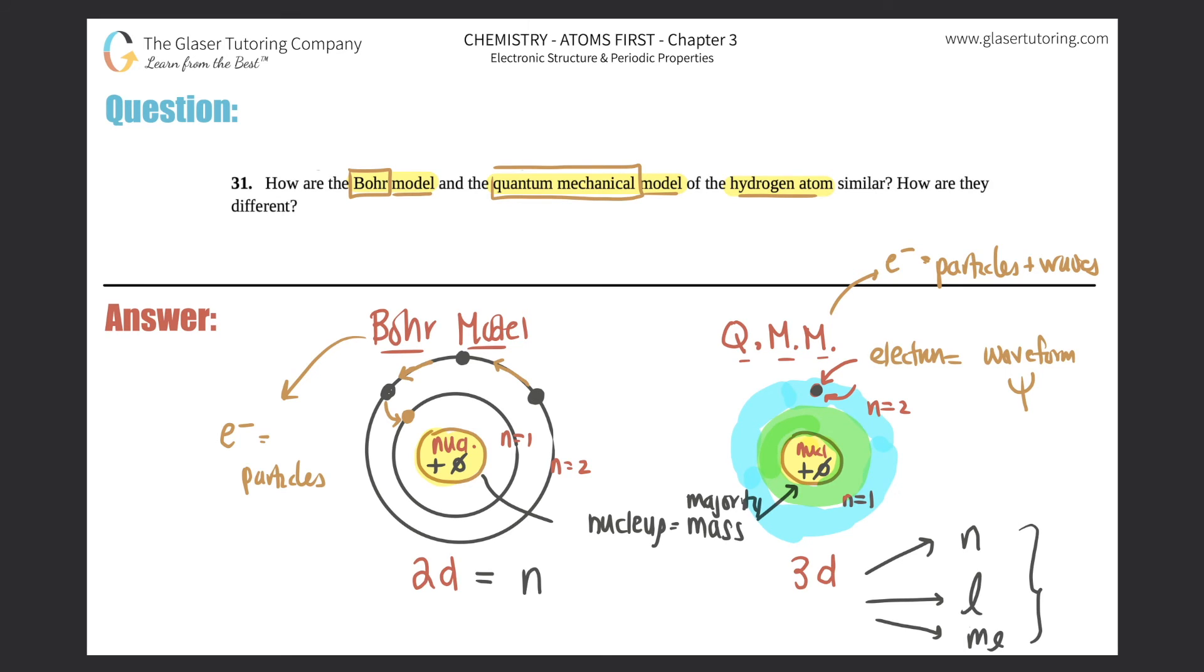So those are all the similarities and differences. The similarities, once again, is the nucleus is positive, and it has protons and neutrons, and that's where the majority of the mass is. But the difference is that whole idea of the electrons outside of the nucleus. One is talking about revolving, which is the Bohr model.